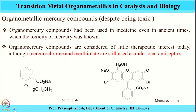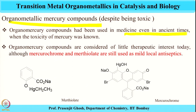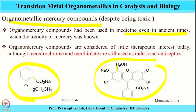Another use of organometallic compounds involves mercury. Organomercury compounds, despite being toxic, have been used in medicines since ancient times. Two mercury compounds — mercurochrome and mercurothiolate — contain metal-carbon bonds and are used as local, mild antiseptics. These represent organometallic compounds of mercury used for antiseptic purposes.